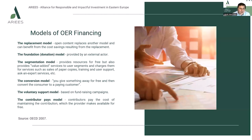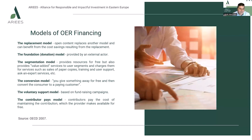In the conversion model, we give something away for free and then we convert the customer to a paying customer. The voluntary support model is based on fundraising campaigns, while the contributor pays model assumes that contributors pay the cost of maintaining the contribution, which the provider makes available for free.